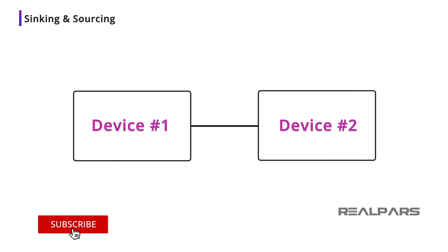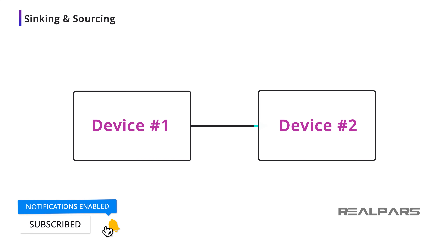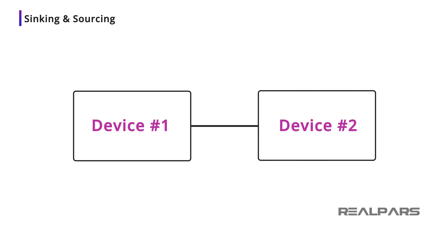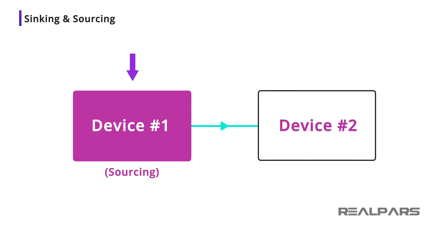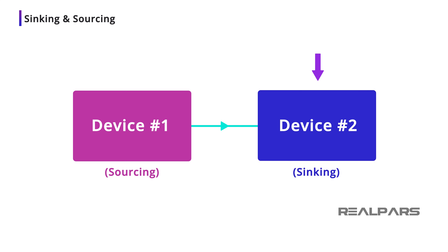Think of it this way. Current is flowing between device number 1 and device number 2. Ask yourself, which direction is the current flowing? The current is flowing from device number 1 to device number 2. Therefore, we say device number 1 is sourcing the current, and device number 2 is sinking the current.